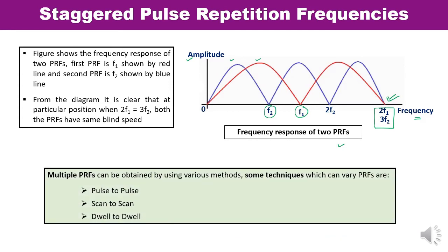Multiple PRFs can be obtained using various methods. Common techniques to vary pulse repetition frequencies include pulse to pulse, scan to scan, or dwell to dwell. However, a problem with using staggered PRF is the residual of uncancelled echoes of clutter, which is due to second time around echoes. To minimize this effect, unstaggered PRF can be used in sectors where second time around echoes are expected more, while the rest of the sector uses staggered PRF.